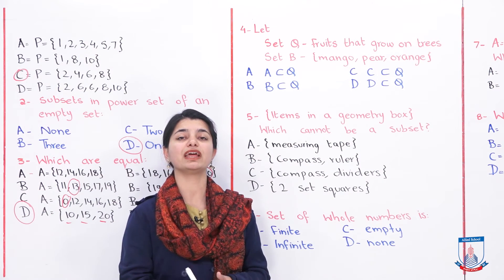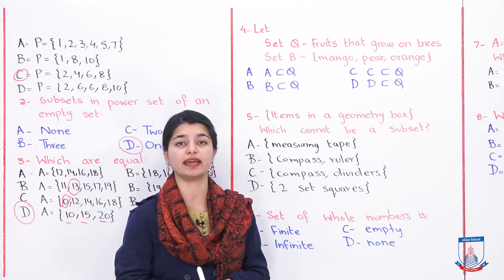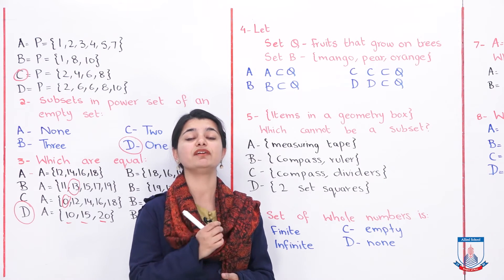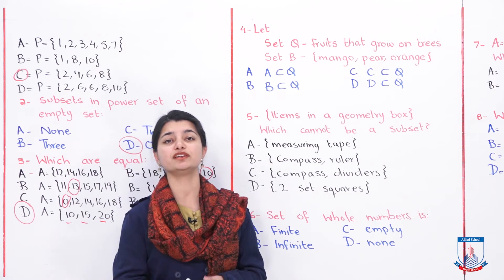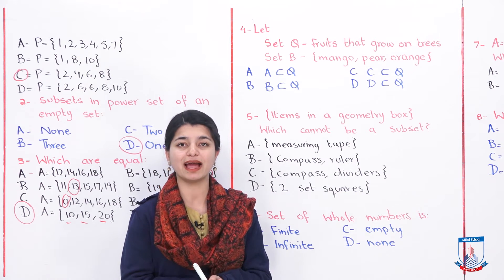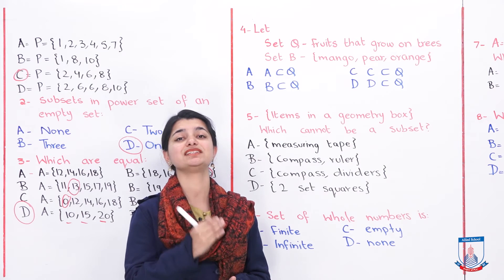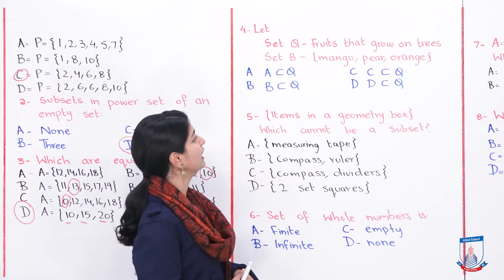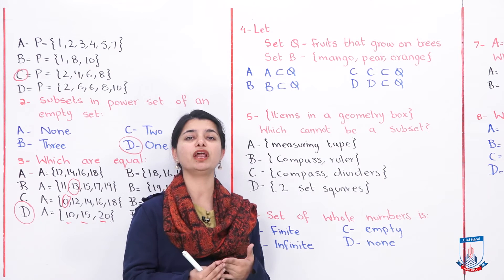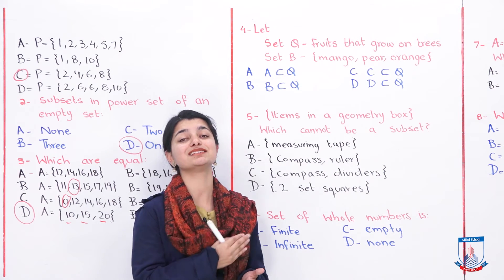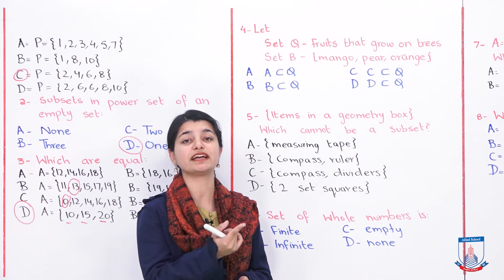In the next MCQ, some information is given: set A, set B, set C, set D. I have only copied the relevant set to avoid confusion. Set Q contains all fruits that grow on trees, described in descriptive notation. Sets A, B, C, and D list different fruit names. Looking at option B — mango, pear, and orange — these are all fruits that grow on trees, so B is a subset of Q.